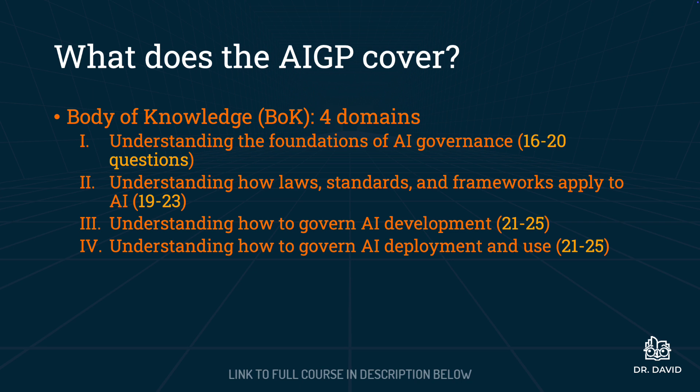At the end of each domain line, numbers in parentheses refer to the number of questions you can expect on the exam. Domain one: approximately 16 to 20 questions. Domain two: approximately 19 to 23 questions. Domains three and four: somewhere between 21 to 25 questions each. Items in domain two are written broadly and can overlap with domains three and four and vice versa.